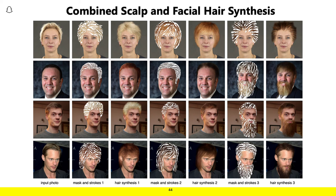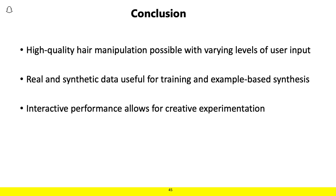Finally, this work shows that the same approach can be used with the traditional scalp hair dataset to do combined scalp and facial hair synthesis, with examples showing different female hairstyles and different male hairstyles with combined scalp and facial hair synthesis. In conclusion, these works demonstrate that high quality hair manipulation is possible in real images at varying levels of user input, from simply providing structure and appearance guidance to providing low-level edits to the overall structure and appearance of hairstyles. We also see how real and synthetic data can be useful for training these systems, and how the interactive performance enabled by these systems on modern hardware allows for iterative and creative experimentation, producing a wide range of results in relatively little time with little experience on the user's part.